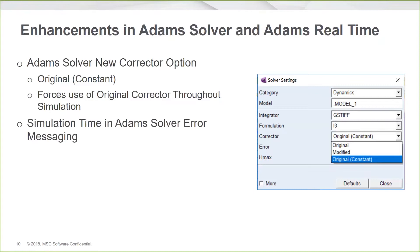Also in Adams Solver, we've added the capability to report simulation time in error messaging. In previous releases, a number of error messages did not report the simulation time at which they occurred, so you could only estimate it from the broad simulation time interval reported on the console or in the message file. Starting in 2019.2, those error messages will now include the exact simulation time at which they occurred.